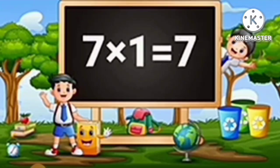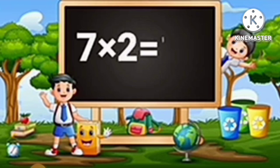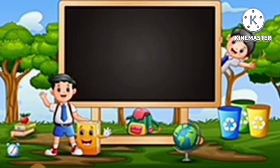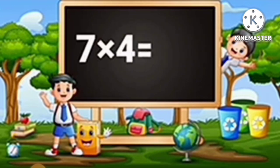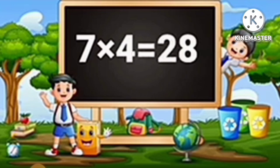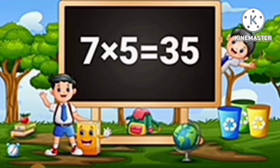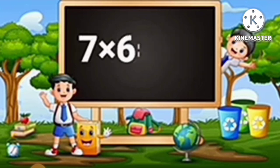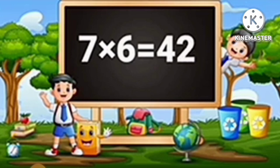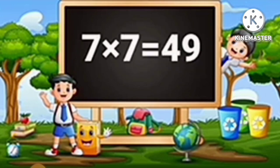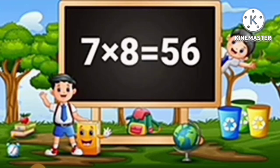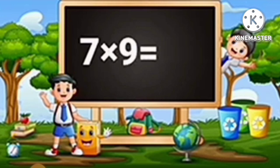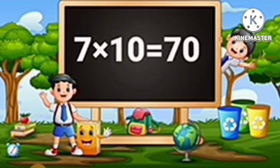Table of 7: 7 ones are 7, 7 twos are 14, 7 threes are 21, 7 fours are 28, 7 fives are 35, 7 sixes are 42, 7 sevens are 49, 7 eights are 56, 7 nines are 63, 7 tens are 70.